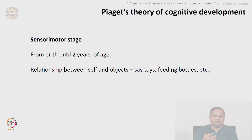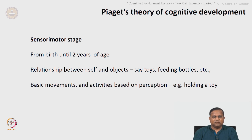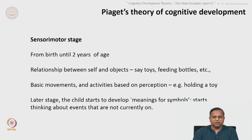The first stage is called the sensory motor stage, from birth to about two years of age. The relationship between self and objects — such as toys and feeding bottles — is predominant in this phase. Basic movements and activities based on perceptions, such as holding a toy, develop. In the later part of the sensory motor stage itself, the child starts to develop meanings for symbols and begins thinking about events that are not currently present.